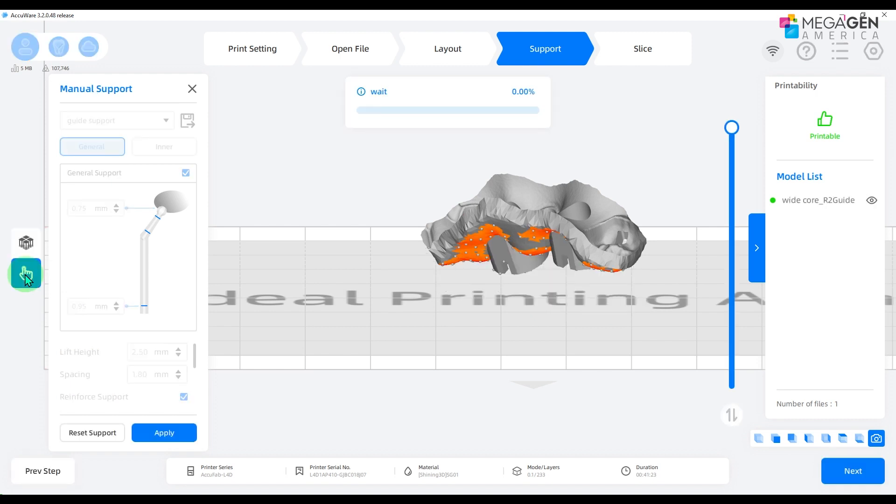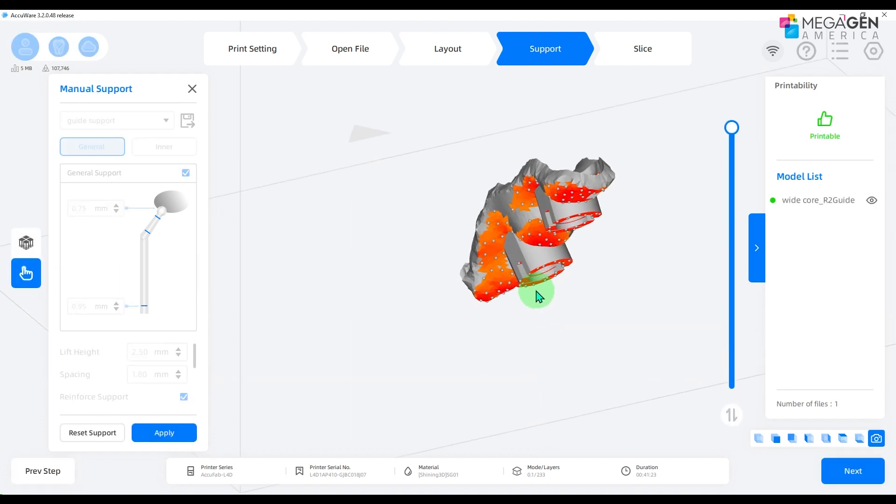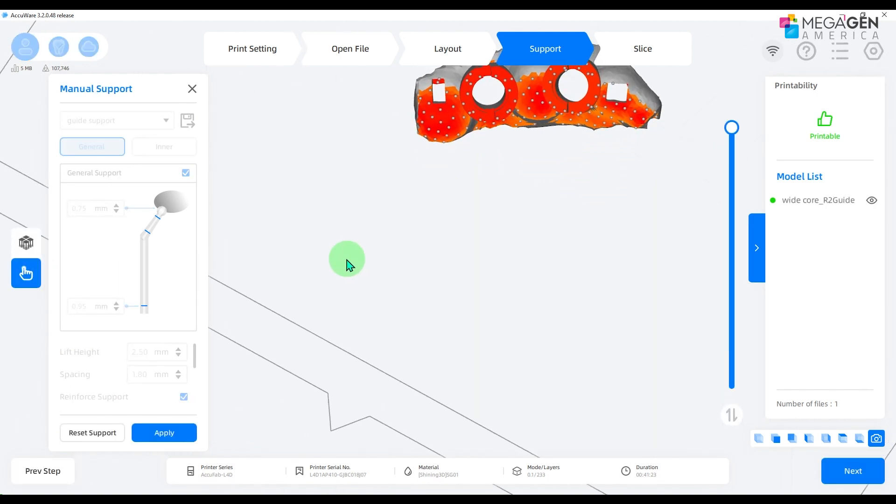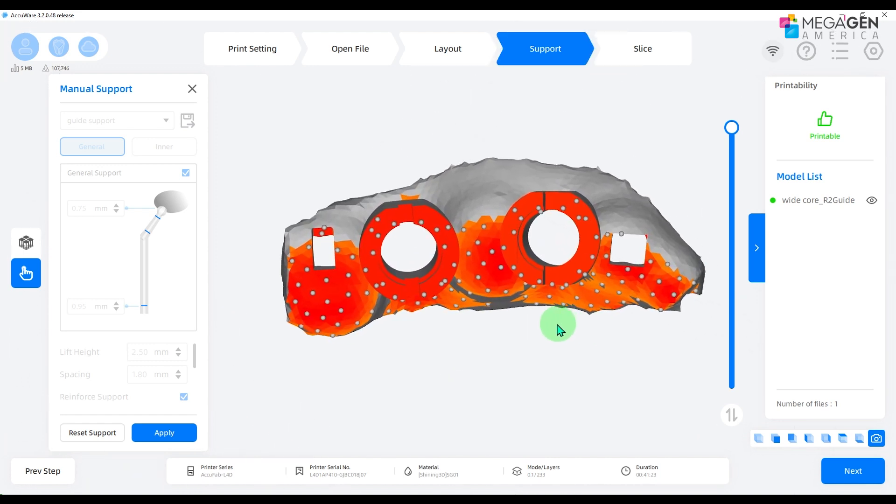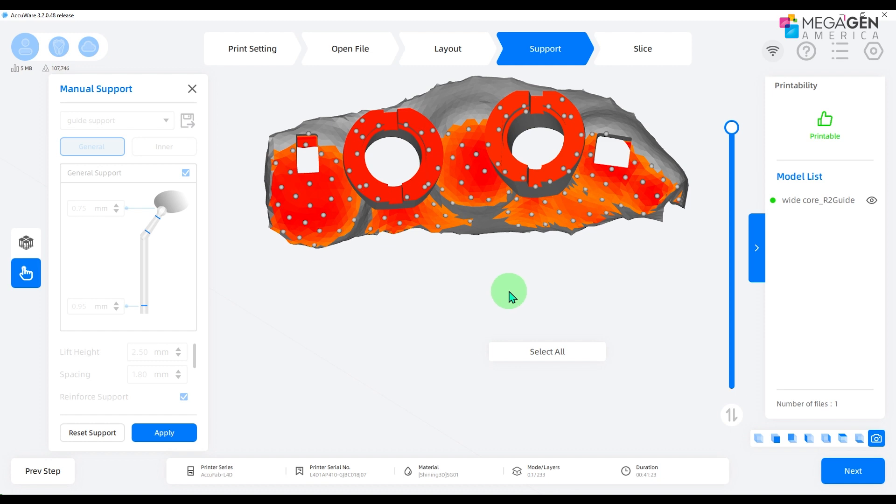For R2 surgical guides, you have to make sure the supports are not created on top of the stopper. Because R2 surgical guides are sleeveless guides, support should not be on or near the stoppers as it may compromise accuracy.